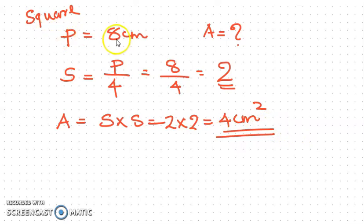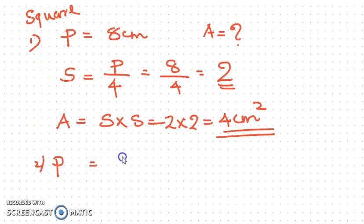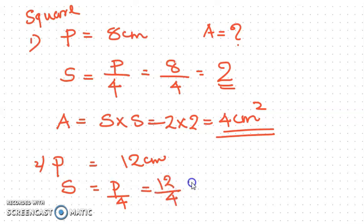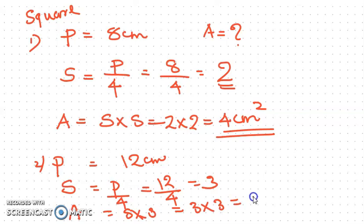If perimeter is given, we can find the area of a square. One more example: if perimeter is 12, first find the side — side equals P divided by 4, so 12 divided by 4 equals 3. Then area equals side into side, 3 into 3, which is 9 cm squared.